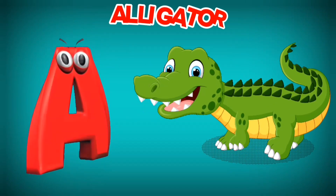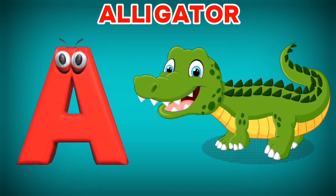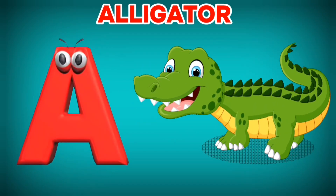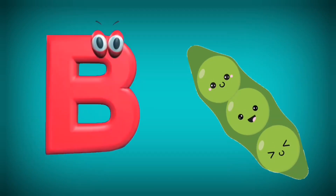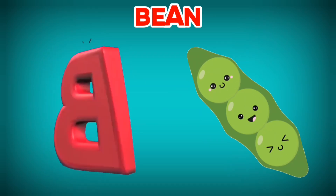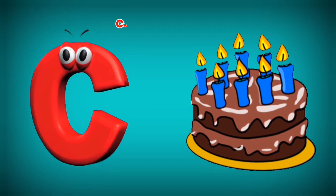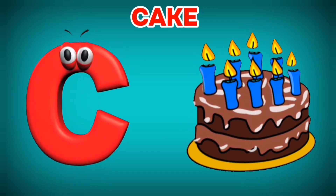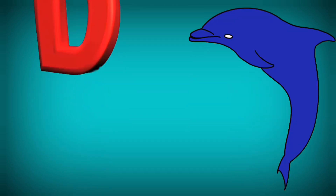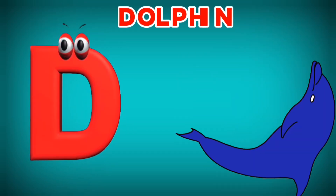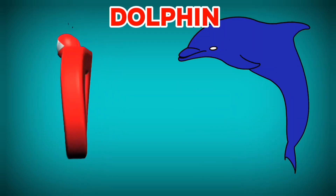A is for Alligator. A, A. Alligator. B is for Bean. B, B. Bean. C is for Cake. C, C. Cake.